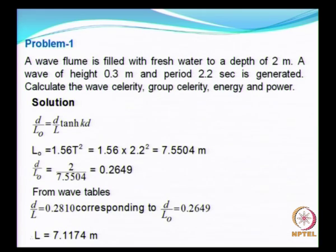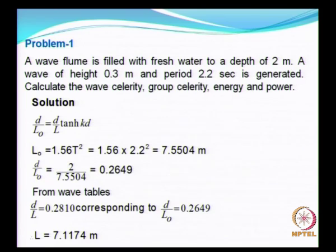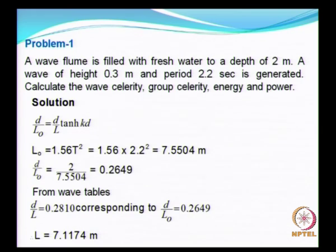Before commencing any type of testing of structures, we need to know about the characteristics of the waves that can be simulated in the wave flume. A wave flume here is filled with fresh water to a depth of about 2 meters, and assume that a wave of height 0.3 meters and a period of 2.2 seconds is generated. We are required to calculate the wave celerity, group celerity, energy and power — for all of which we have already seen the formulas. Later we will be dealing with wave characteristics in the open ocean, but this is to start with only a wave flume.